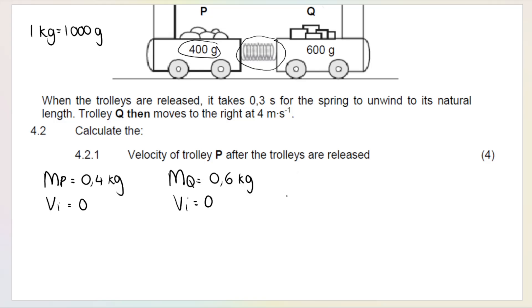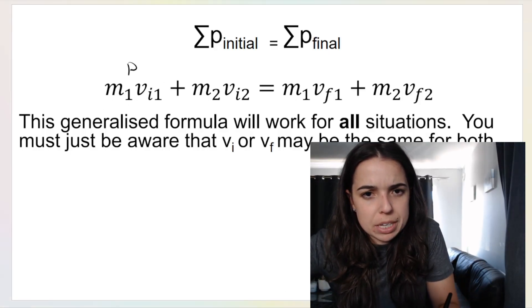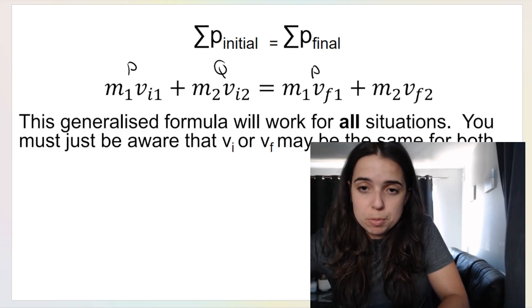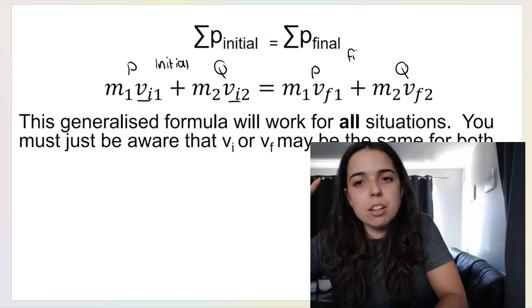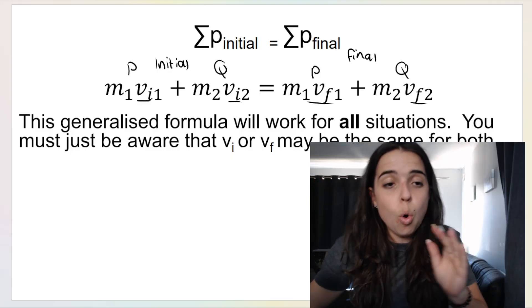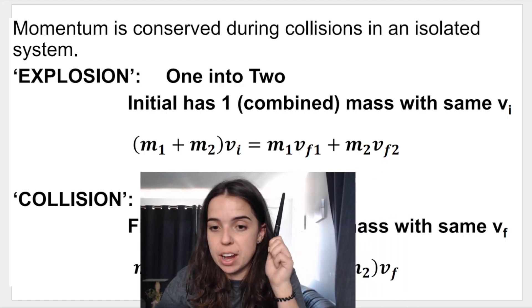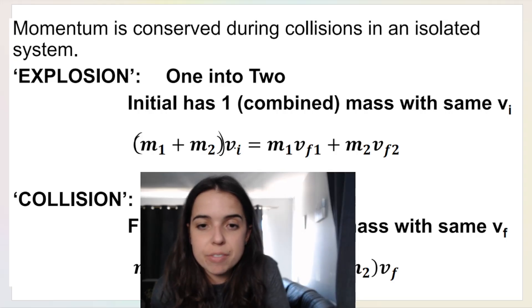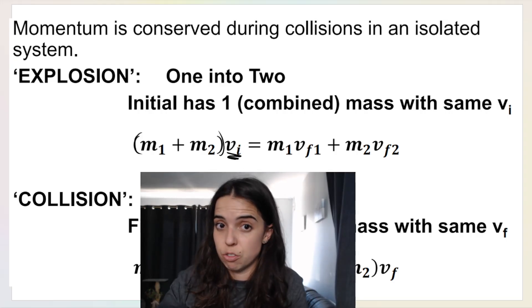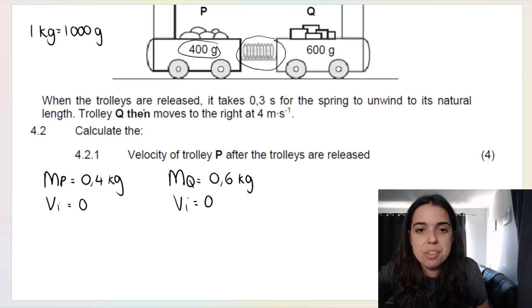We can apply the conservation of linear momentum formula: m₁v₁ᵢ + m₂v₂ᵢ = m₁v₁f + m₂v₂f. Because the objects were initially stuck together with the same initial velocity, you could alternatively write (m_P + m_Q) × v_initial — which equals the same thing. Either approach works. Then trolley Q moves to the right at 4 m/s.